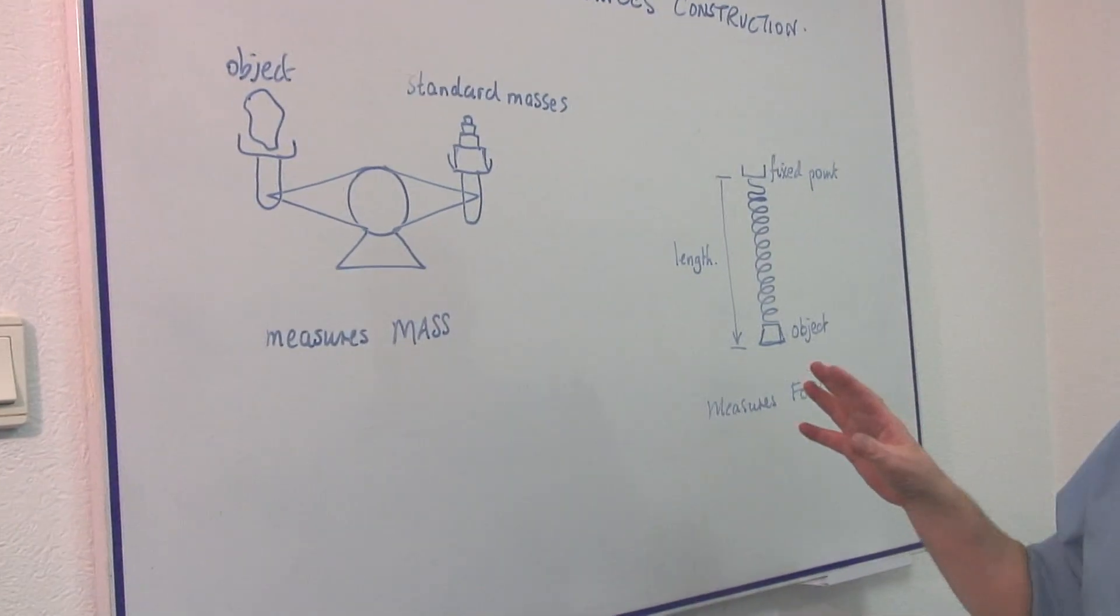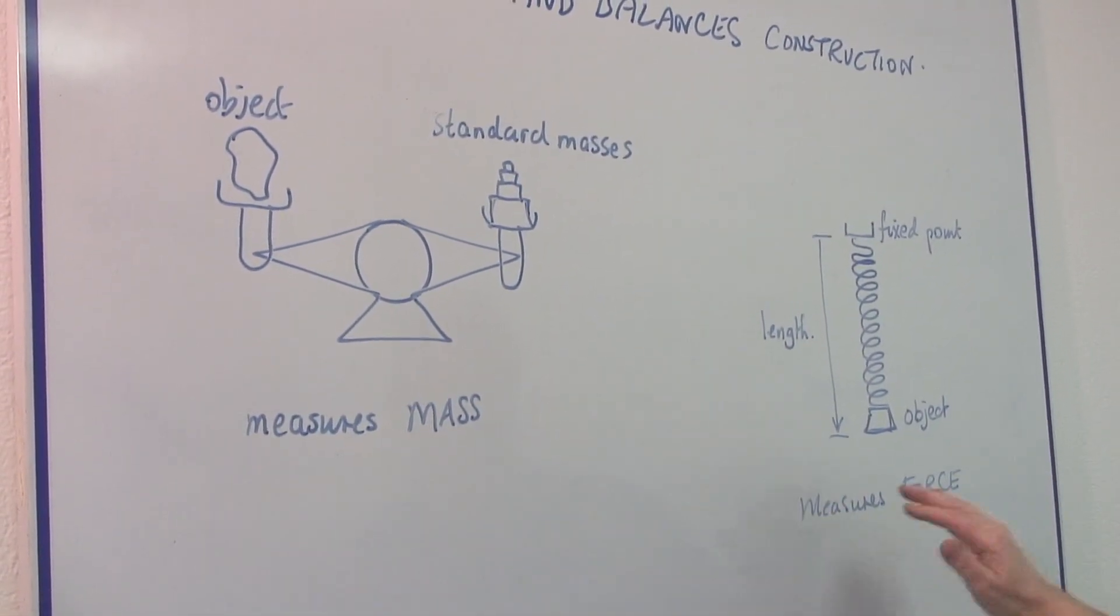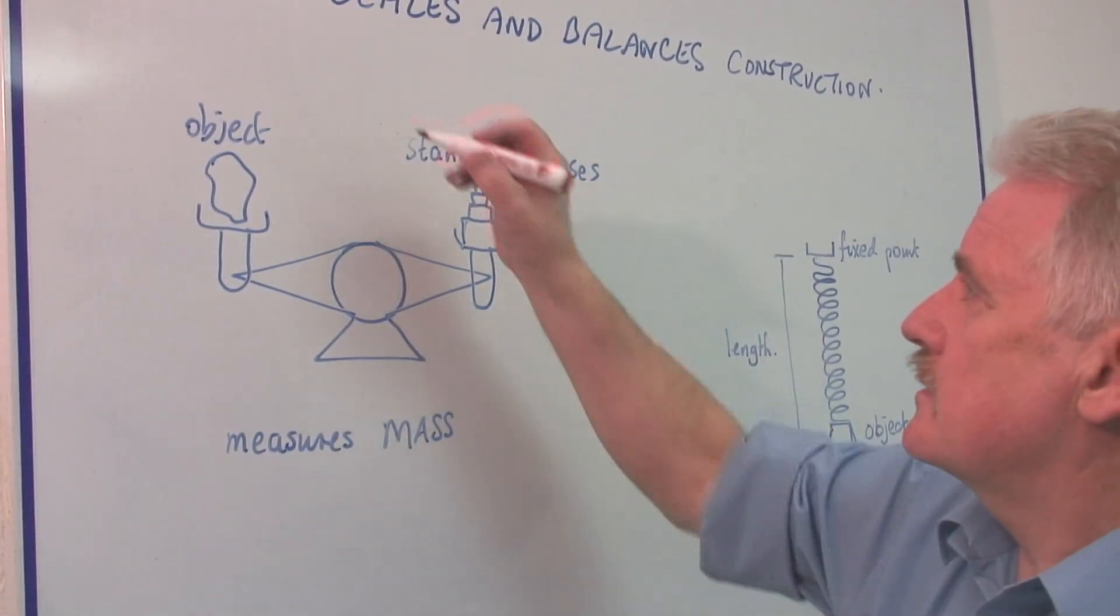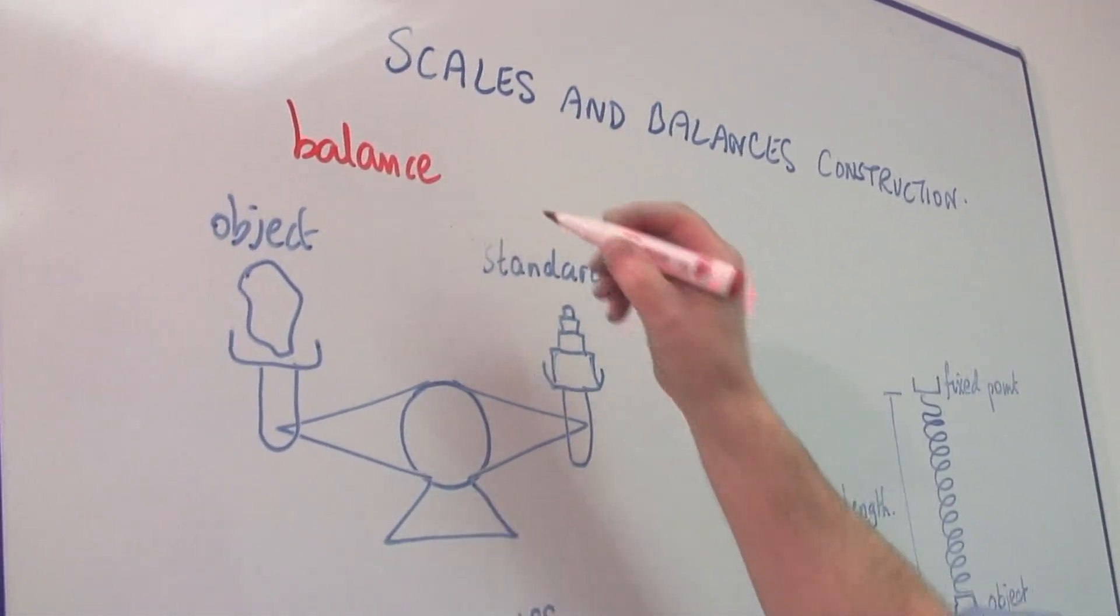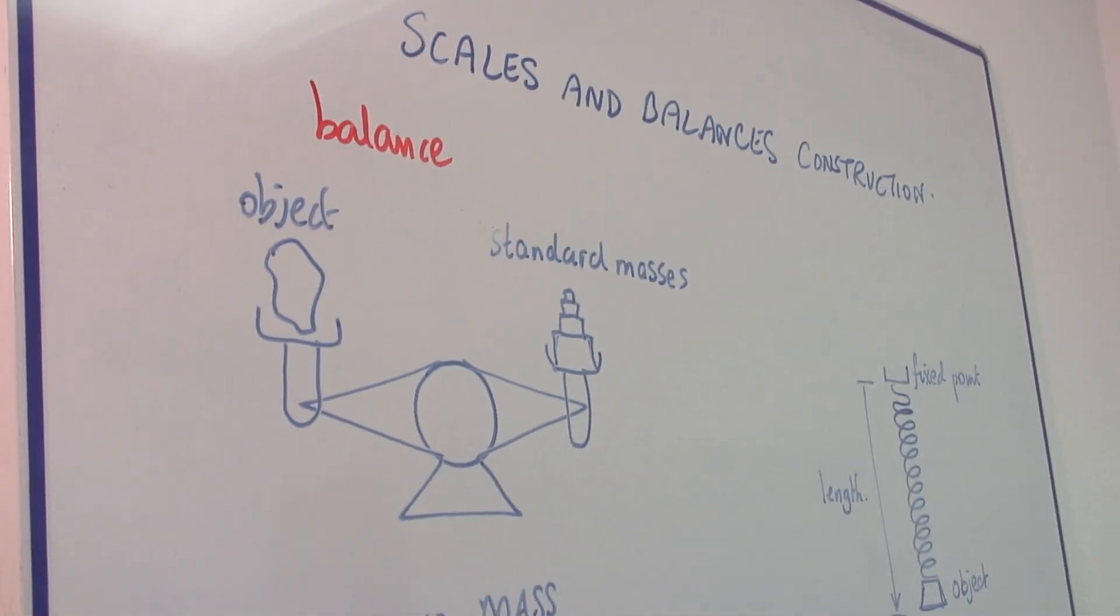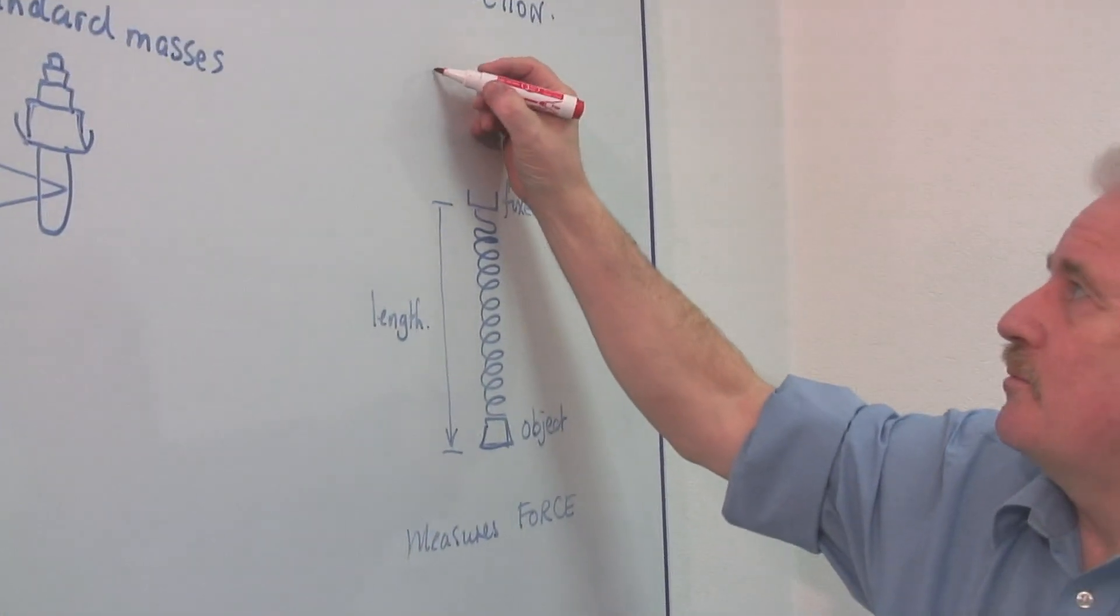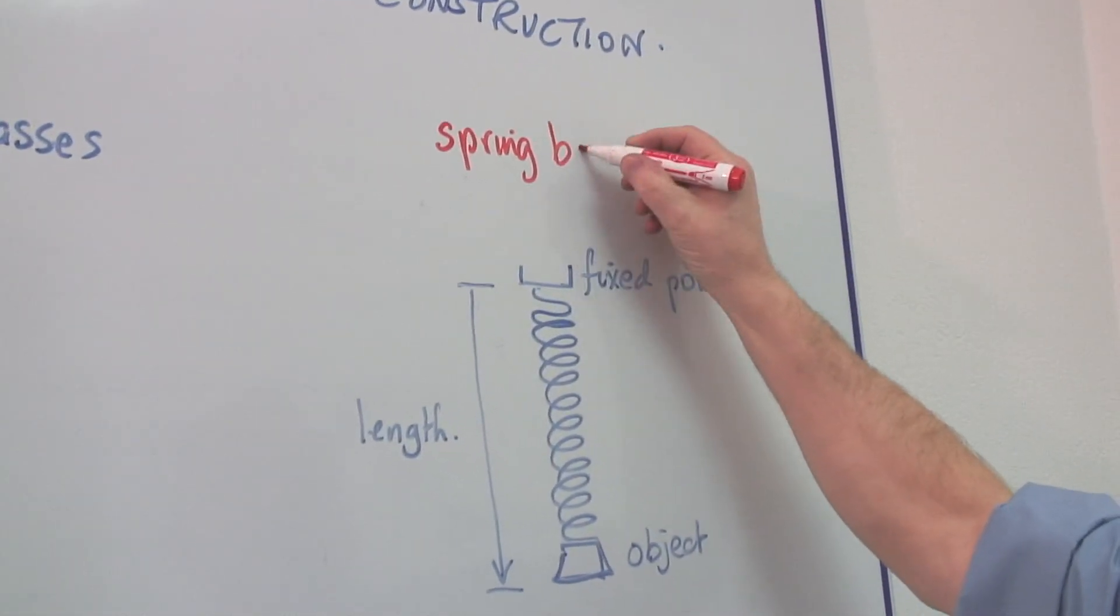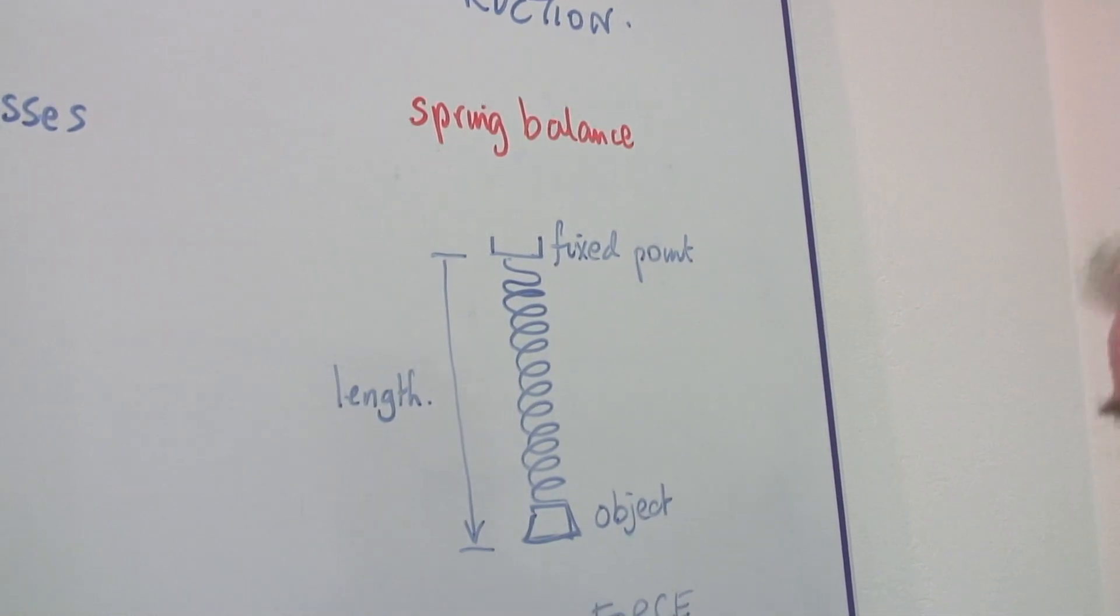And in fact, there are two basic groups of measuring devices which measure mass or force. That is this which we call a balance. Strictly, it's called a balance for a good reason. I'll explain in a moment. And this, which is also called a balance, but we often refer to it as a spring balance.